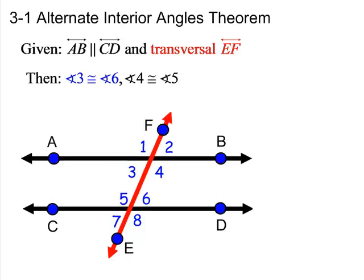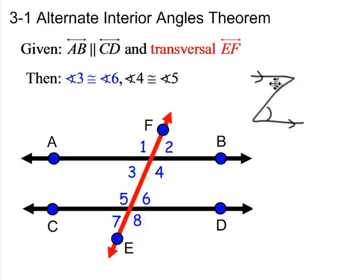The alternate interior angles theorem — I like to remind everyone that it looks like the letter Z. These are the alternate interior angles here, the inside of the Z, with those two parallel lines. So that would mean that angle 3 is congruent to angle 6, and angle 4 is congruent to angle 5.